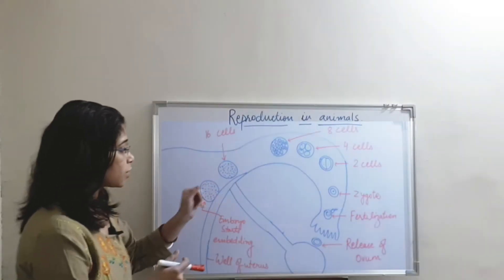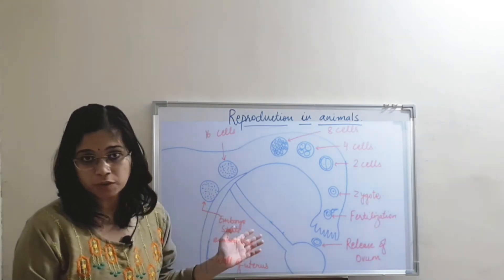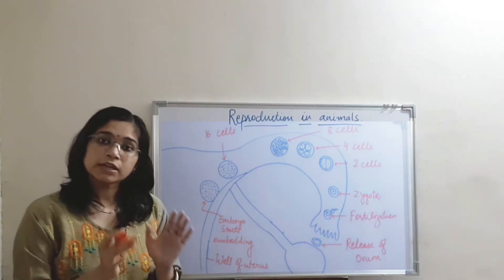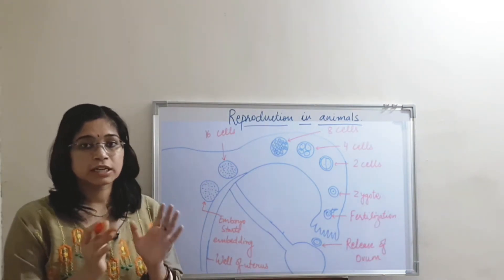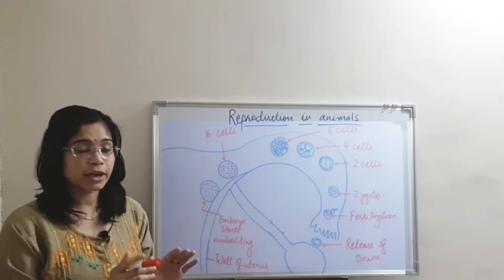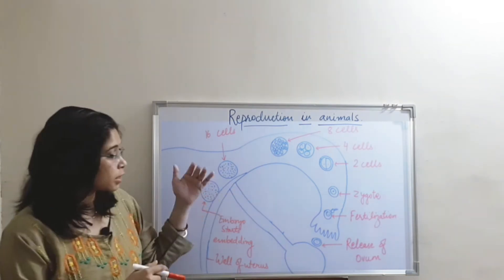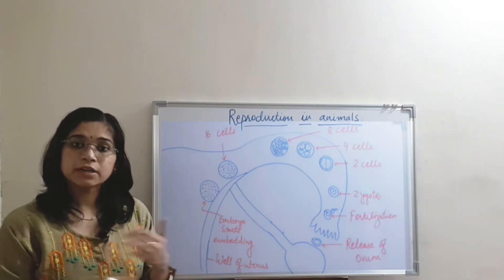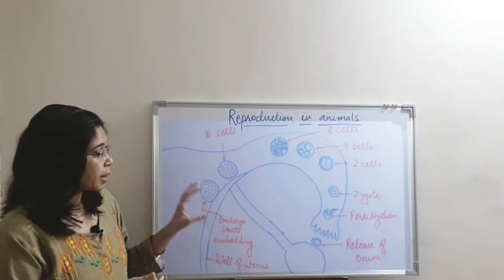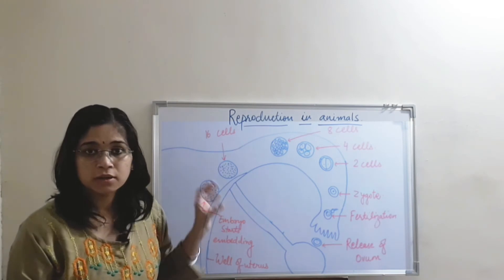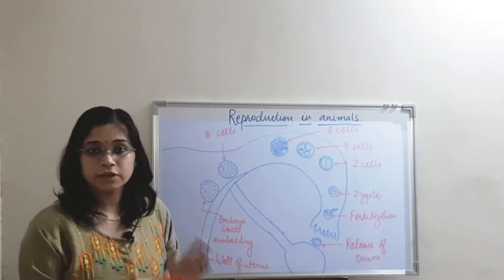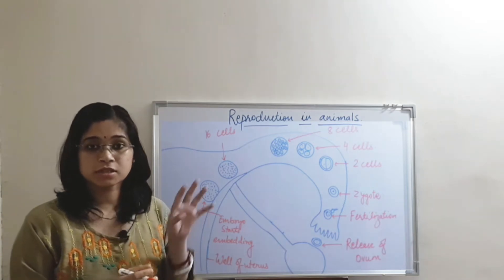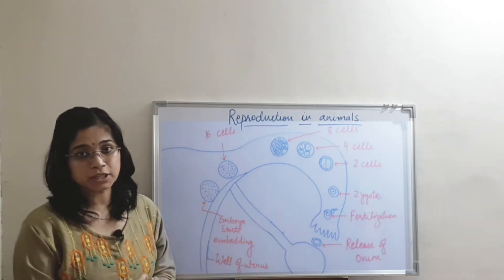The ovary produces the ovum. The ovum gets fertilized in the oviduct, forming a zygote. This zygote divides into two cells, then four, then eight, and division keeps on taking place. The embryo, after it is formed, will reach the uterus for further implantation. Implantation is the process through which the embryo gets embedded into the uterus.